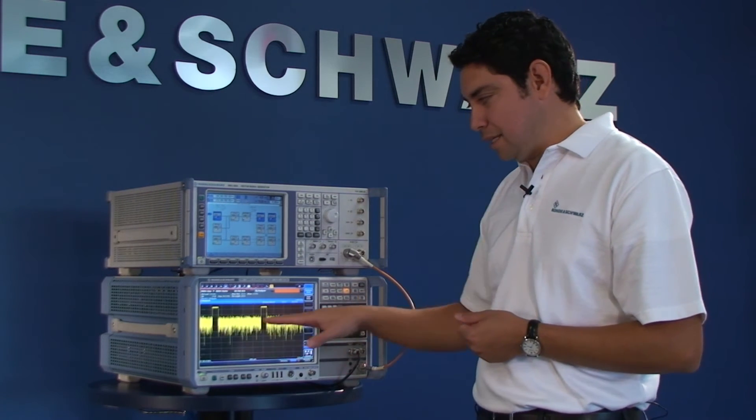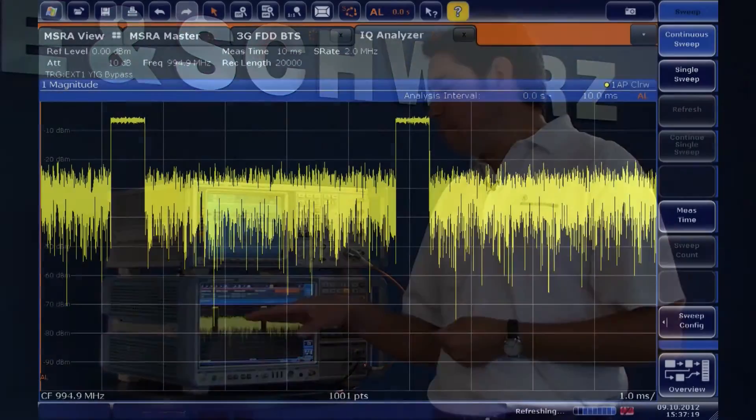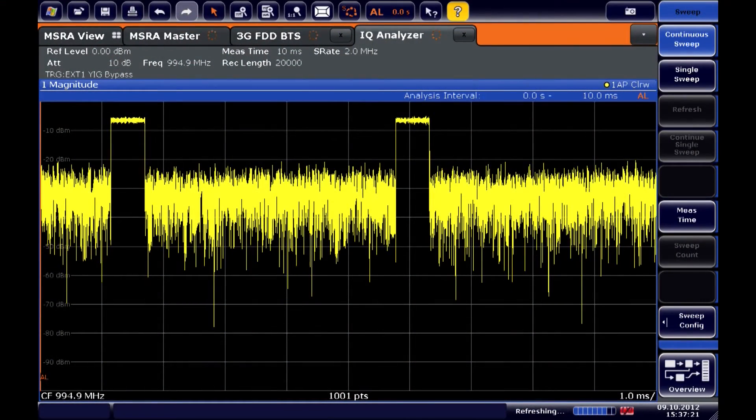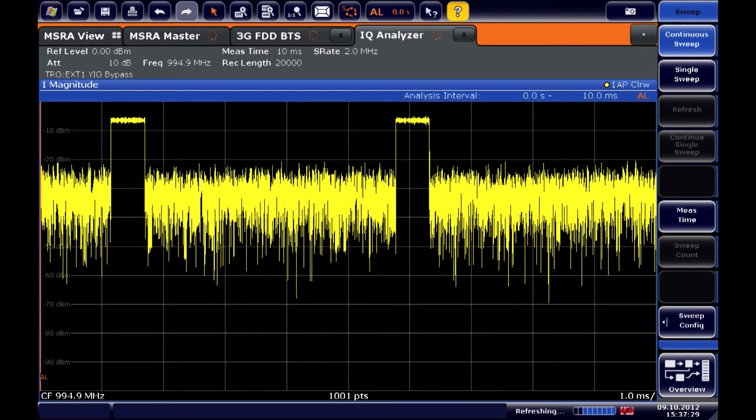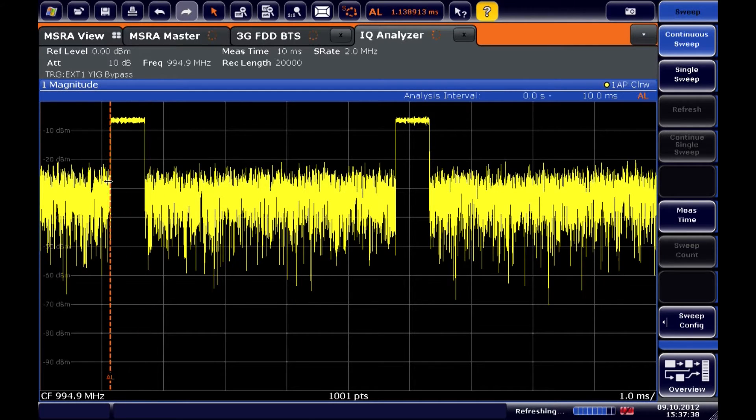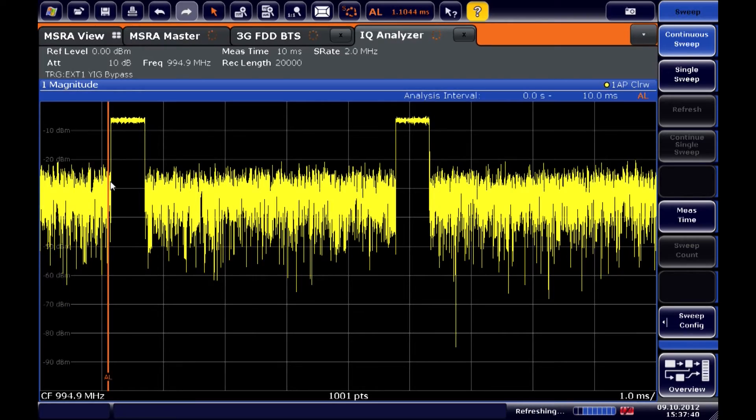I can see now in this view the power versus time of one of my GSM carriers. I can definitely see that maybe one of the slots is active only, so there's a bunch of idle time. Now I want to utilize one brand new feature, a timeline. It's a global variable that I can use to mark my traces.